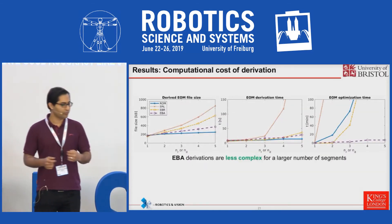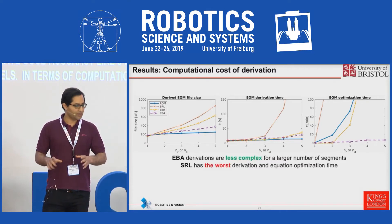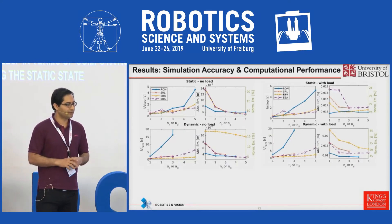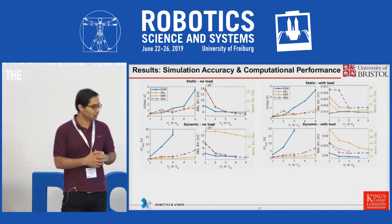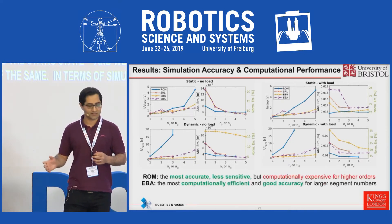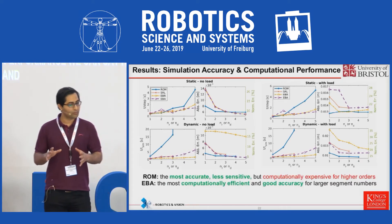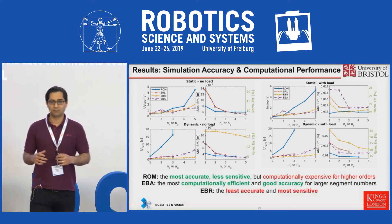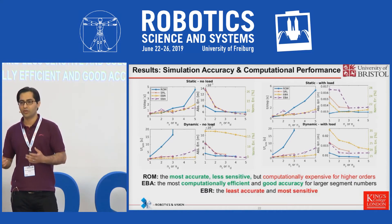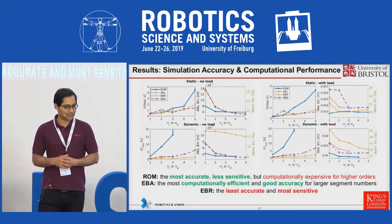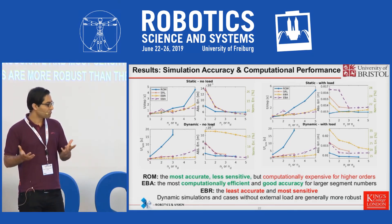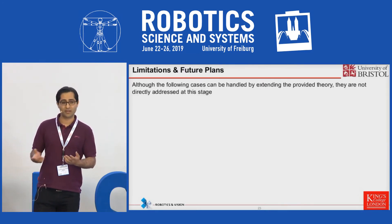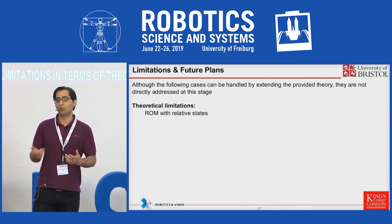In terms of computational costs of derivation, using absolute states is the least complex, using serial rigid links is the worst, and the reduced order model is about the same. In terms of simulation accuracy and computational performance, the reduced order model is the most accurate and least sensitive. Using absolute states is the most computationally efficient with good accuracy, and using relative states is the least accurate and most sensitive. In general, dynamic simulations are more robust than the static ones. We also have limitations in terms of theory and application that I'd love to discuss more during the poster session.